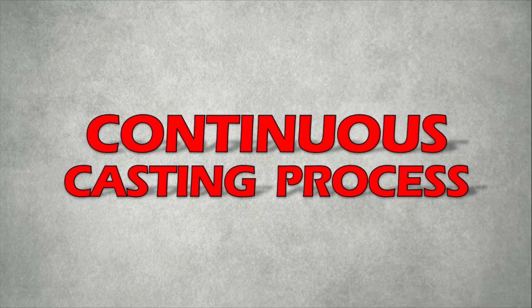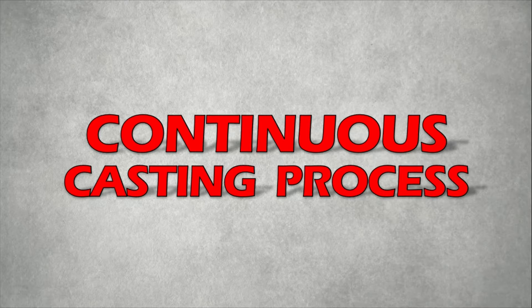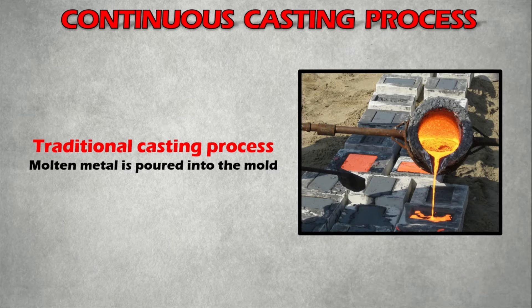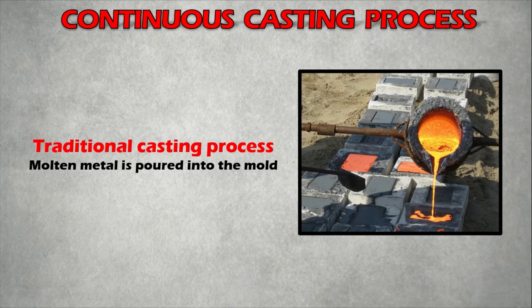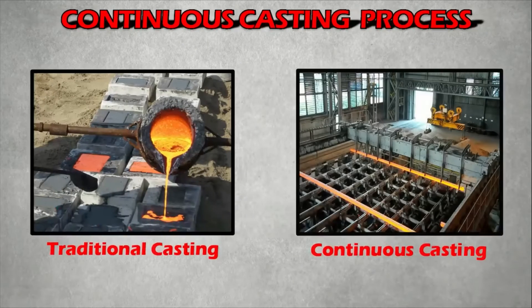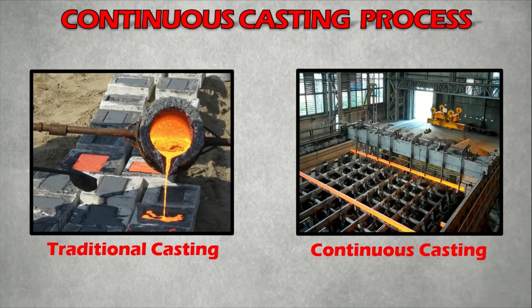Today we are going to learn about the continuous casting process and why the continuous casting process is preferable over the traditional casting process. In the traditional casting process, the raw materials are charged in batches in a furnace where it becomes molten metal. The accumulated liquid metal is tapped and cast in molds. Disadvantages of this traditional method are addressed in the continuous casting process.